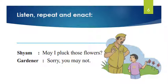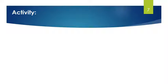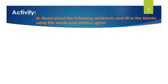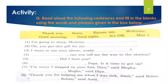I hope you understood this lesson. Now, dear students, see this activity — this is your exercise. Read aloud the following sentences and fill in the blanks using the words given in the box: thank you, sorry, excuse me, welcome, good morning, good night, it's okay, may I. The first sentence is: 'I am going to sleep, mommy.' When we go to sleep, we say 'Good night.' So the answer for the first blank is 'Good night.'